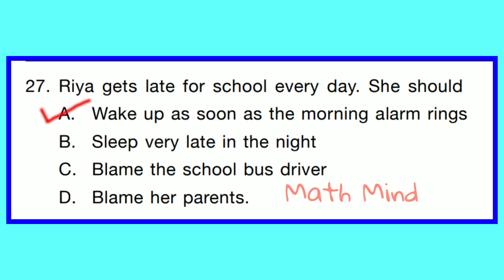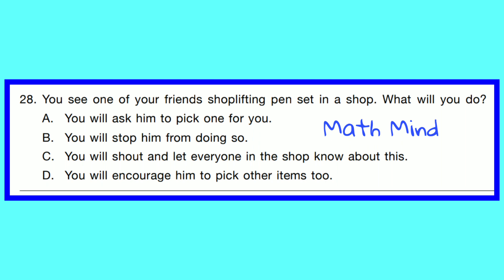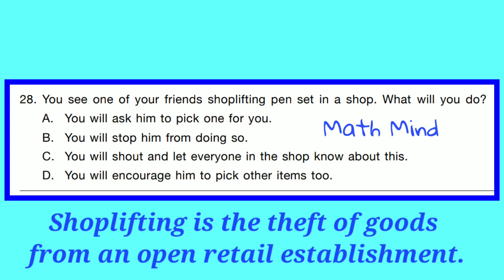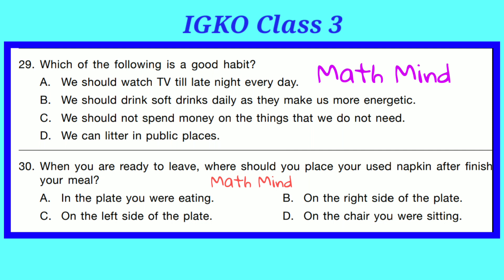Question No. 28. You see one of your friends shoplifting a pencil set in a shop. What will you do? Shoplifting is the theft of goods from an open retail establishment. So Option B is correct — you will stop him from doing so. Question No. 29. Which of the following is a good habit? Option C is correct — we should not spend money on things that we do not need.